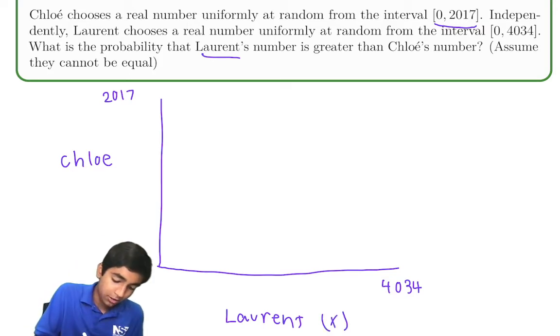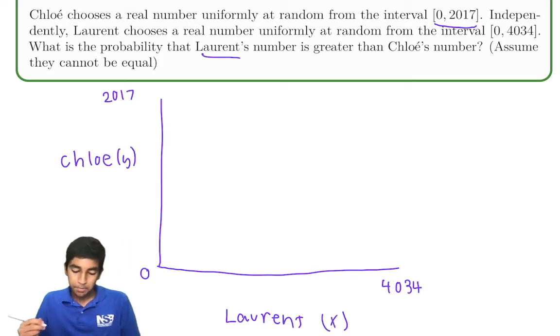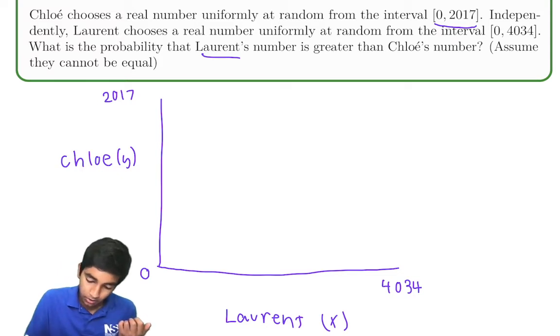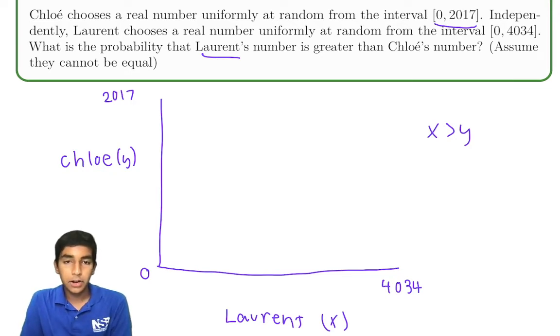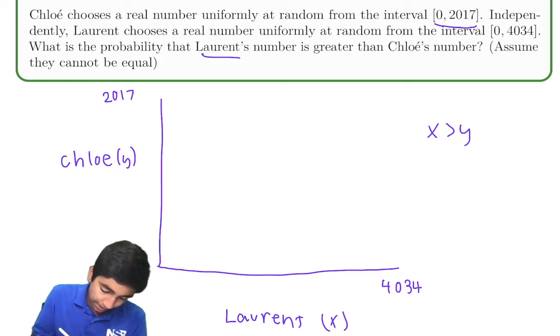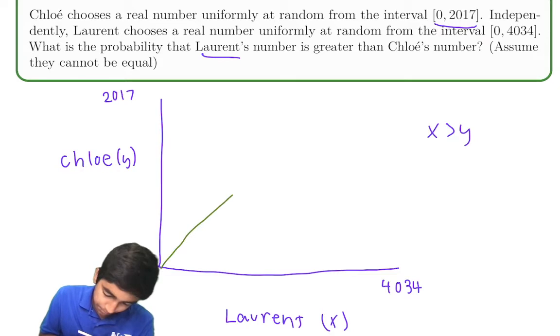The y-axis. Not by that, I mean. So, for Laurent's number to be bigger, what must be true? x must be greater than y. Okay, so x must be greater than y. What does that mean? Well, we know that x equals y is going to look something like this.